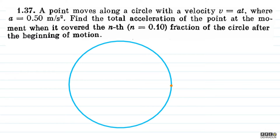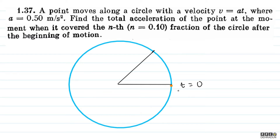Now, we are asked: what will be the total acceleration when the particle has covered the nth fraction of the circle from the beginning of motion? So at t = 0, the particle was at rest — speed was zero, it starts from zero. Now, at the particular moment, it has covered the nth fraction of the circle. Total angle is 2π, and the nth fraction means angle covered = 2πn. Since n = 0.10, theta = 2πn.